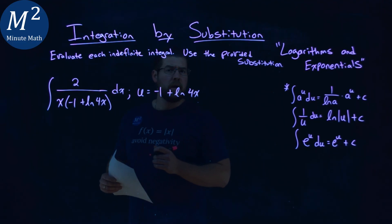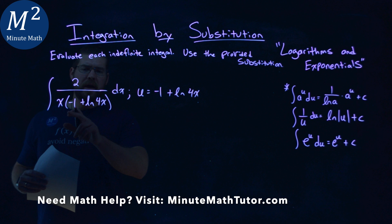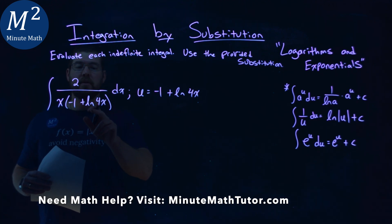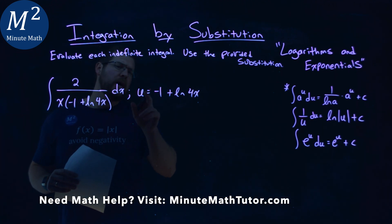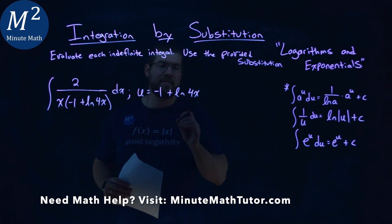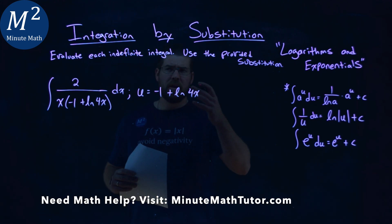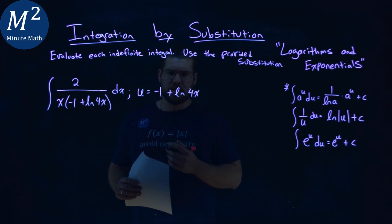We're given this problem right here, the integral of 2 over x times negative 1 plus natural log of 4x dx, and the u value of negative 1 plus natural log of 4x, and we have to evaluate this indefinite integral.